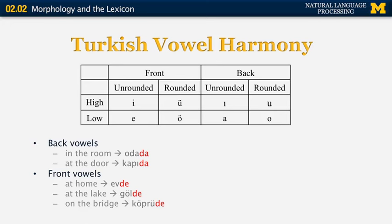In vowel harmony, within the same word you can only have back vowels or only have front vowels. The suffix 'da' or 'de' in Turkish indicates location — in, on, or at. We use 'da' if the vowels in the word are back vowels, and 'de' if they are front vowels. For example, 'oda' means room — 'odada' means 'in the room' because 'oda' has only back vowels. 'Kapı' means door — 'kapıda' means 'at the door.'